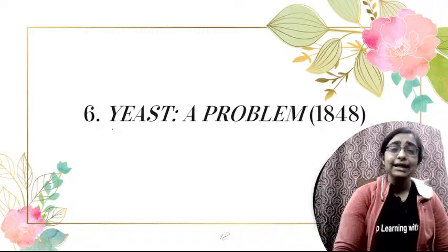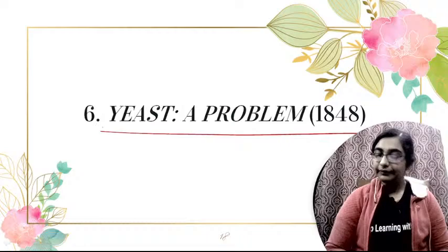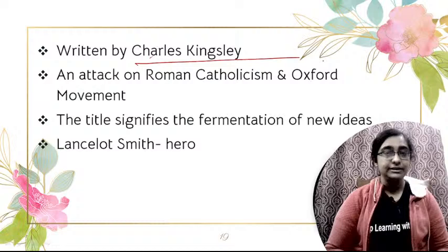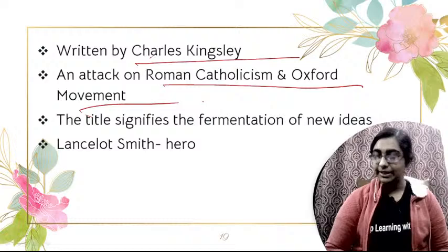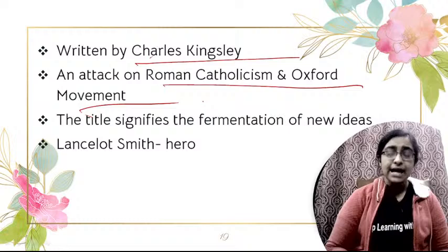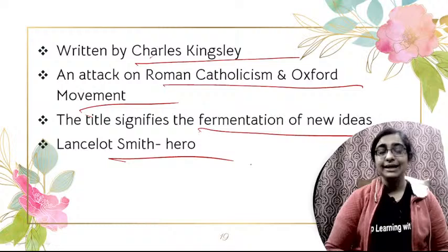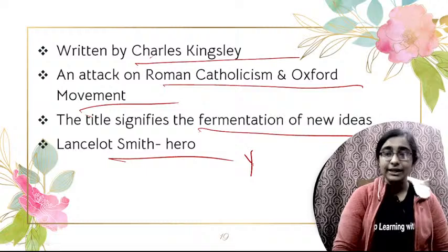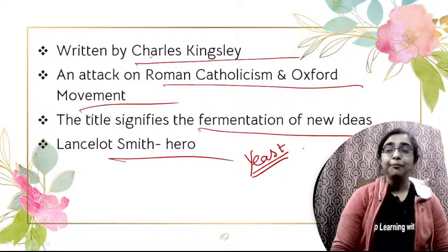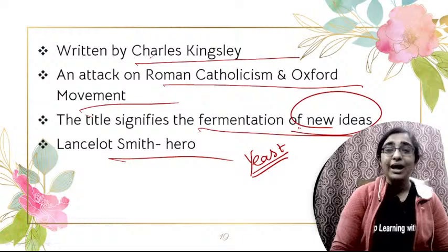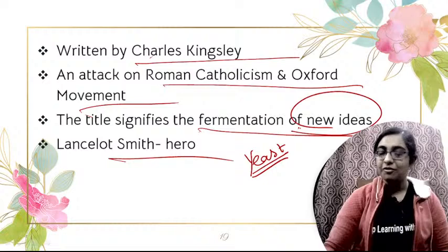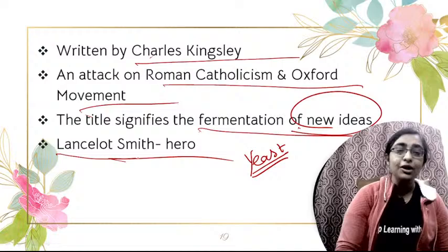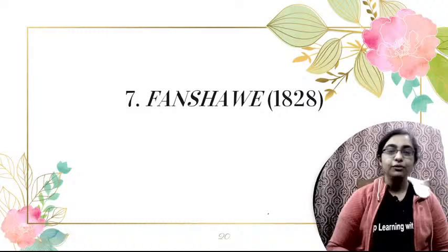Next is Yeast: A Problem, published in 1848, a novel written by Charles Kingsley. It is an attack on Roman Catholicism and the Oxford Movement. The title signifies the fermentation of new ideas — yeast being a specific type of fungus used for fermentation. The novel is not very widely read, but as a debut novel, the title is very interesting. The hero's name is Lancelot Smith.